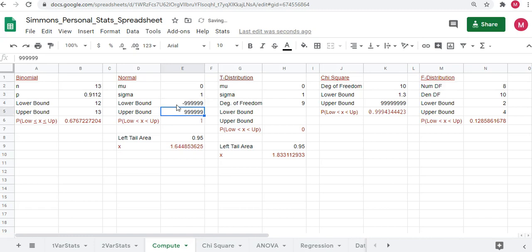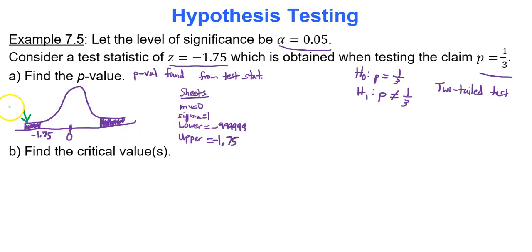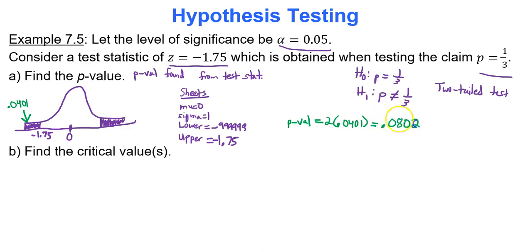The upper bound is negative 1.75, and the area of that left tail is 0.0401 — the 4th decimal rounds up because there is a 5 afterwards. So the left tail area is 0.0401. The p-value is the sum of the two tails for a two-tailed test, so multiply that by 2: 0.0802. That is your p-value. For a two-tailed test, take the area of one tail and double it.